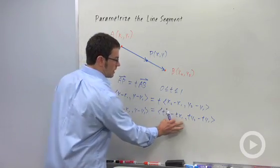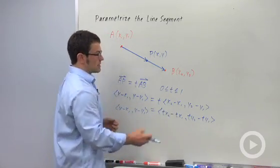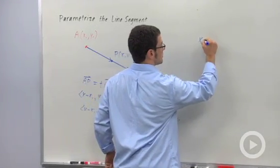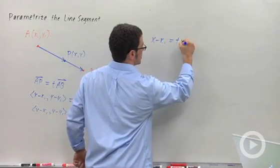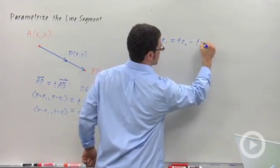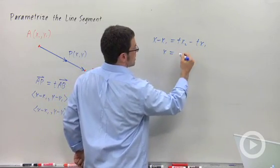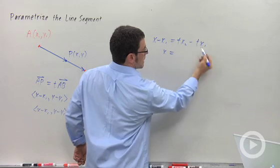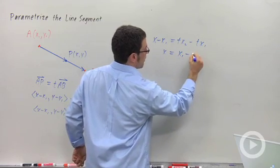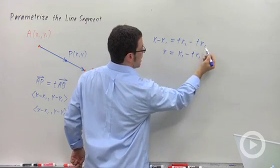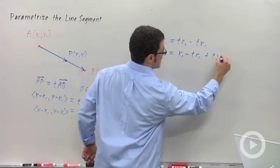So x minus x1 equals T x2 minus T x1. Let me add the x1 to both sides and I get x equals, and I'm going to pull this guy in front, x1 minus T x1 and then plus T x2.